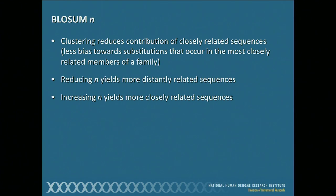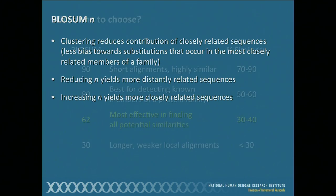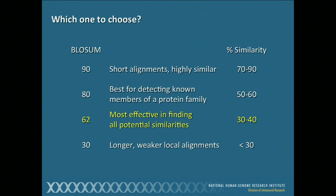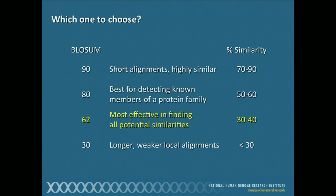The implications: when we do this clustering, we reduce the contribution of closely related sequences — less bias. Bottom line, when we reduce n, you get more distantly related sequences; when we increase n, you get more closely related sequences. Here's your first cheat sheet of the morning — put a star on this slide. If you're looking for shorter alignments that are highly similar, you're going to pick a BLOSUM matrix with a higher number. At the bottom, if you use the BLOSUM30 matrix, you would get longer, weaker local alignments, but you would use these to detect more distantly related proteins with much lower sequence similarity.